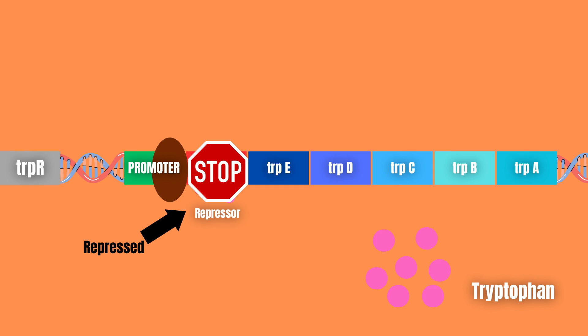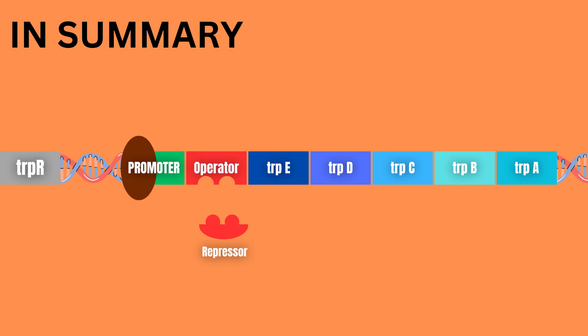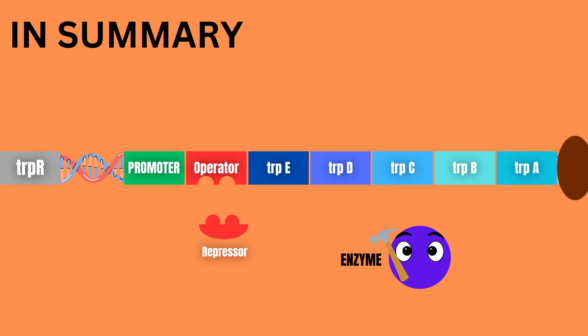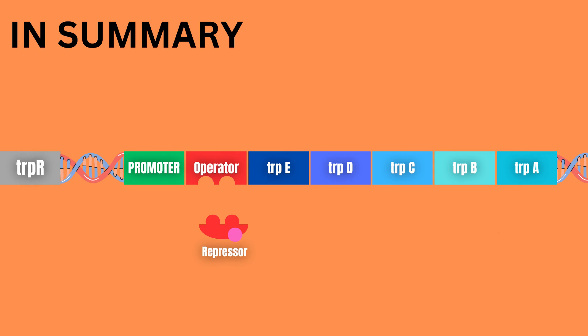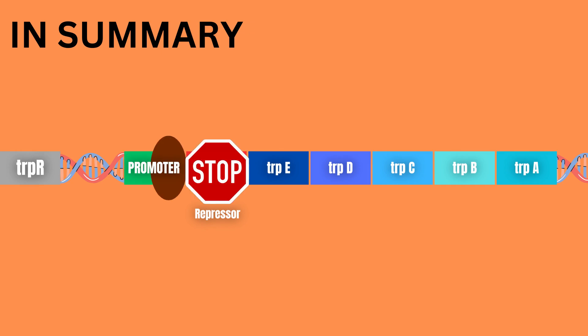In summary, usually tryptophan needs to be produced, and as such the repressor is inactive and the TRP operon is expressed, resulting in the production of tryptophan. If there is an excess of tryptophan, however, the repressor is activated and the TRP operon is repressed, subsequently stopping the production of tryptophan.